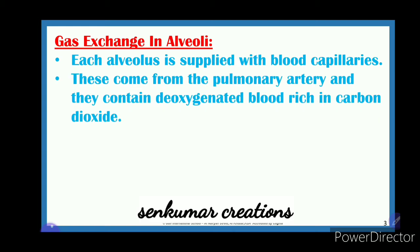The blood capillaries come from the pulmonary artery and contain deoxygenated blood rich in carbon dioxide. Arteries carry oxygenated blood — except the pulmonary artery. Veins carry deoxygenated blood — except the pulmonary vein. So the pulmonary artery carries deoxygenated blood with a high quantity of carbon dioxide.